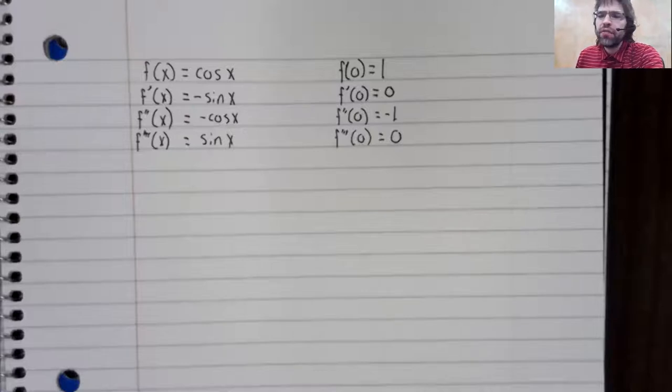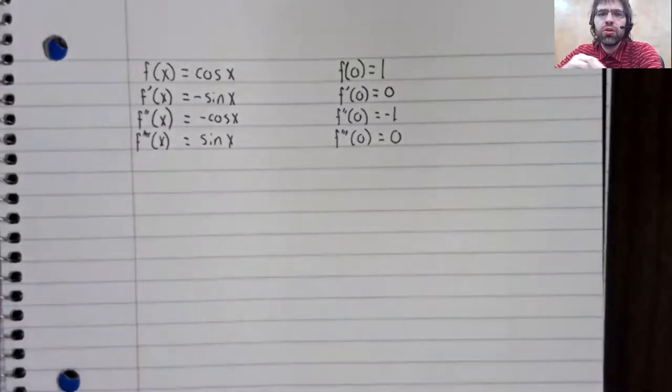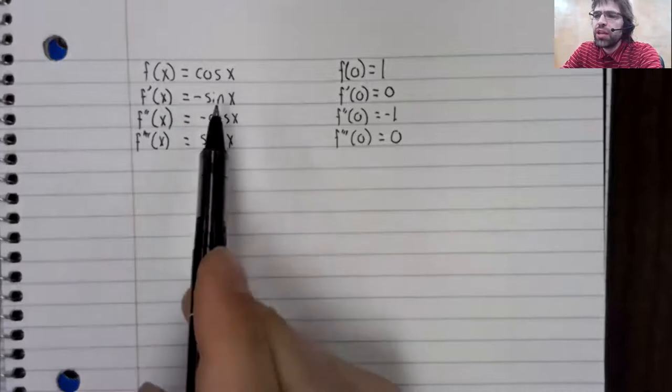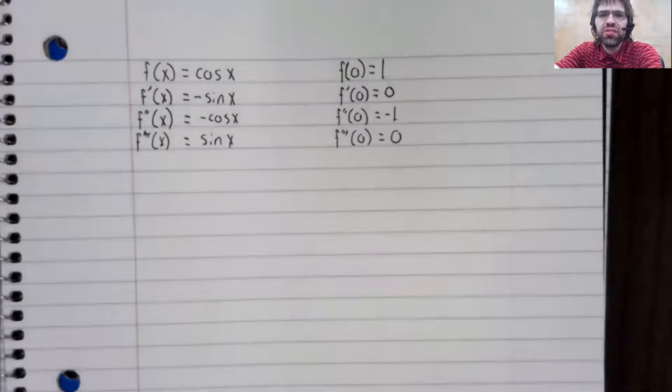Here I have the cosine and the first, second, and third derivative. The cosine, the negative sine, the negative cosine, and the positive sine.